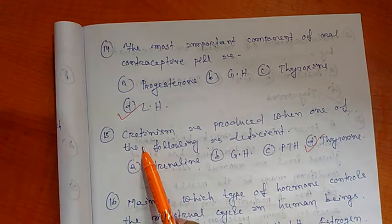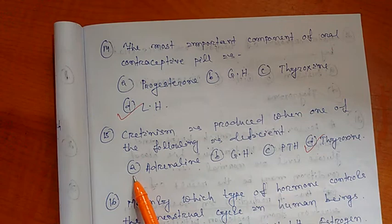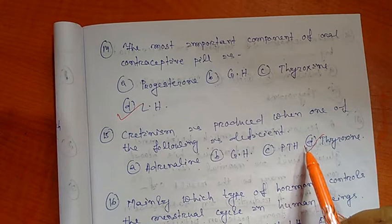Next question number 15: Cretinism is produced when one of the following is deficient. Options are A) Adrenaline, B) GH, C) PTH, and D) Thyroxine. So the right option is thyroxine.